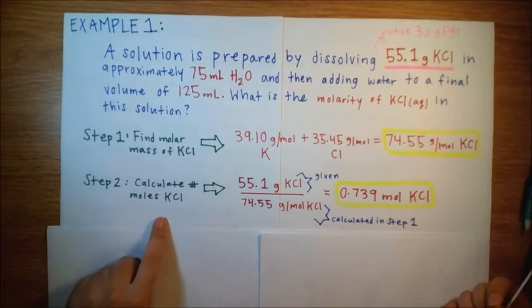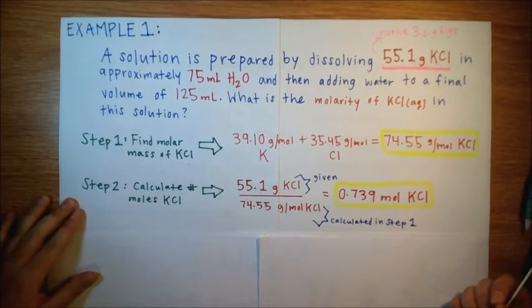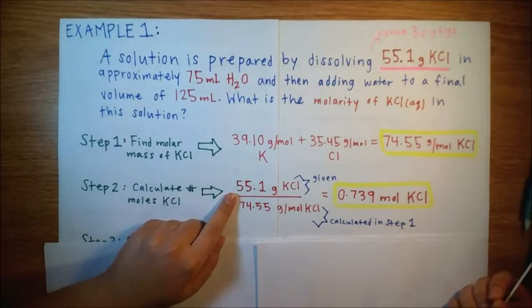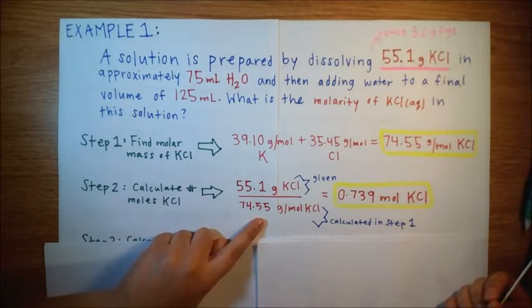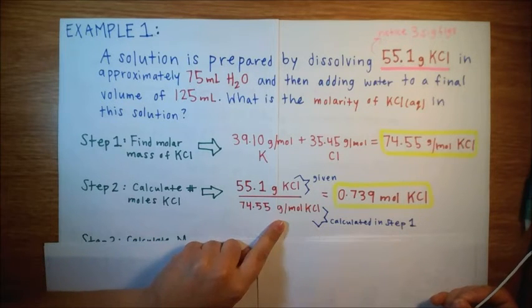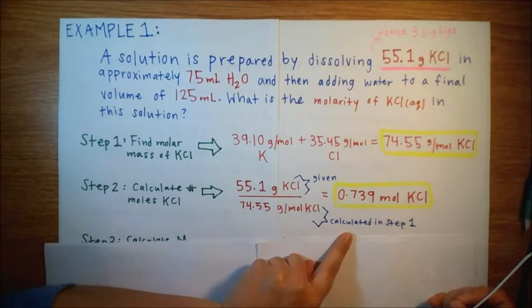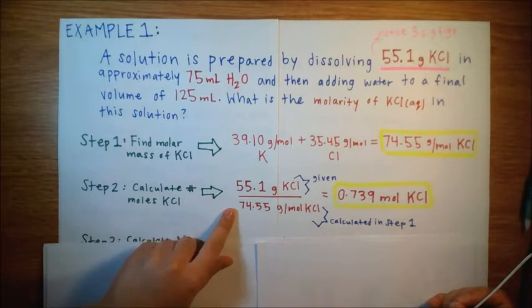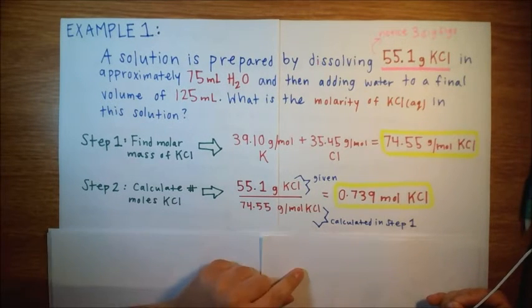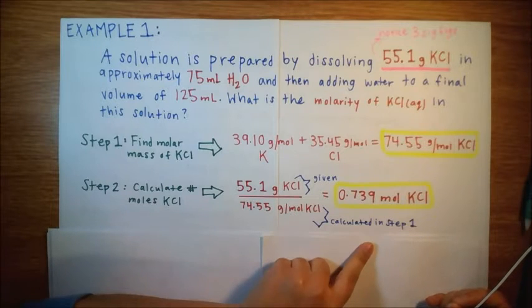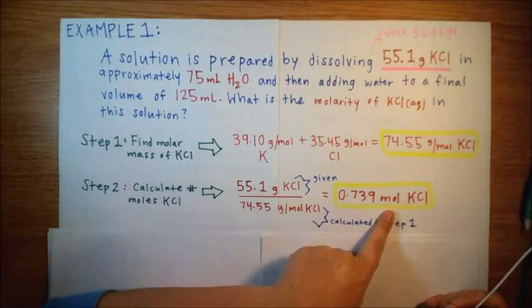Now we need to calculate the number of moles in potassium chloride. So we're given that there are 55.1 grams of potassium chloride. And we take the molar mass, which we calculated in step one, as the denominator of this fraction. And once you punch that into your calculator, you'll get that we have 0.739 moles of potassium chloride.